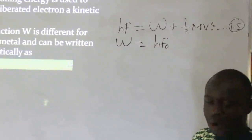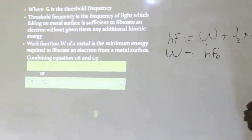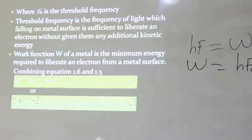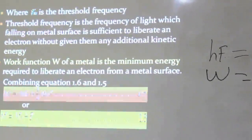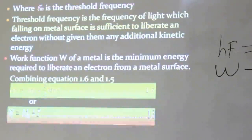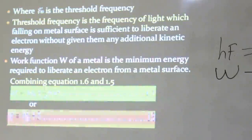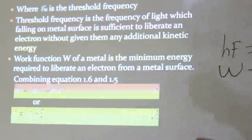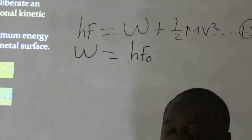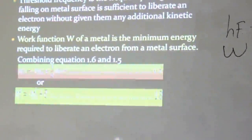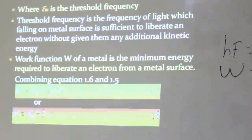W, the work function, equals H times F naught, where F naught is the threshold frequency. The threshold frequency is the frequency of light which falls on the metal surface that is sufficient to liberate an electron from that metal without giving the electron any additional kinetic energy. The work function is the minimum amount of energy required to liberate an electron from the metal surface.